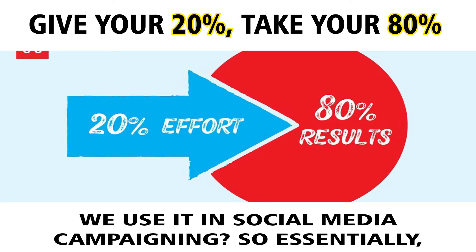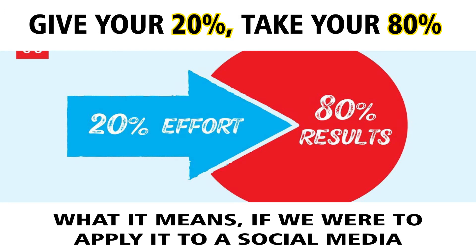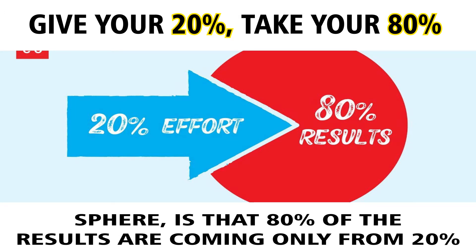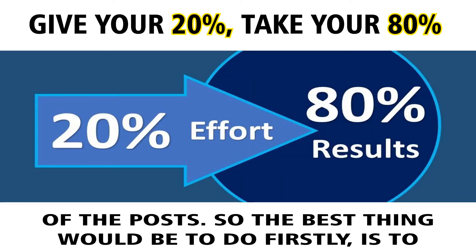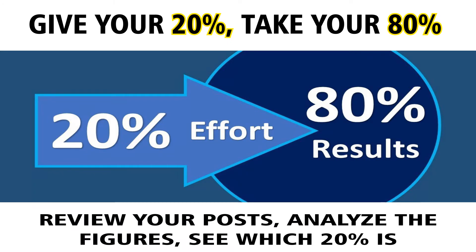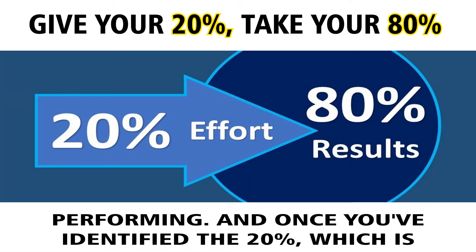So what does this mean and how can we use it in social media campaigning? Essentially, if we apply it to the social media sphere, 80% of the results are coming from only 20% of the posts. The best thing to do first is to review your posts, analyze the figures, and see which 20% is performing.